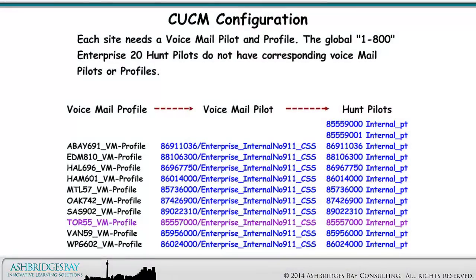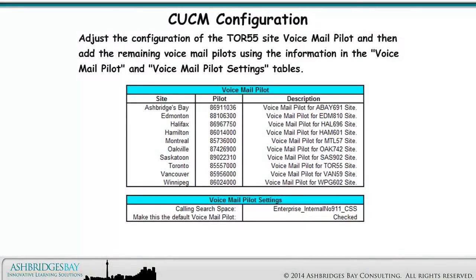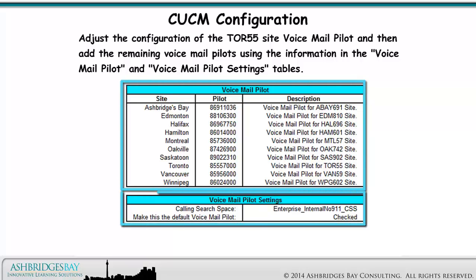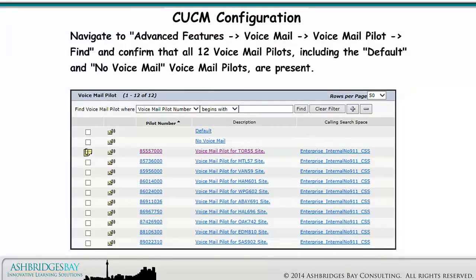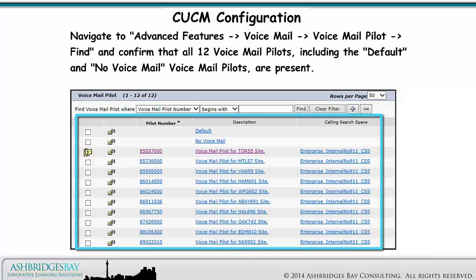Each site needs a voicemail pilot and profile. The Global 1800 Enterprise 20 HuntPilots do not have corresponding voicemail pilots or profiles. Adjust the configuration of the Toronto 55 site voicemail pilot and then add the remaining voicemail pilots using the information in the Voicemail Pilot and Voicemail Pilot Settings tables. You can't copy voicemail pilots — you have to add them individually. Navigate to Advanced Features, Voicemail, Voicemail Pilot, Find, and confirm that all 12 voicemail pilots, including the default and no voicemail voicemail pilots, are present.